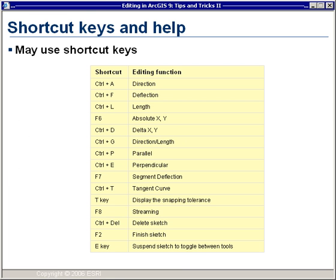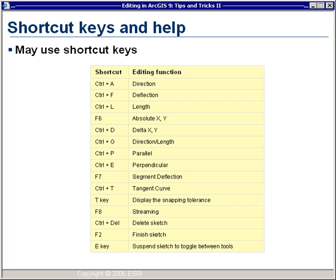Most of these different constraints have shortcut keys, which are very helpful while you're sketching. Some common shortcuts would be CTRL-L to type in a specified length for the next segment, or CTRL-G to specify both direction and length, or CTRL-P to apply a parallel constraint. The T key is very useful — while you're busy sketching, press T to visualize your current snapping tolerance. Hold the V key down to see the vertices of a feature while working with the sketch tool. You also have the X key to zoom out, the Z key to zoom in, and the C key to pan while busy sketching.